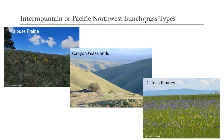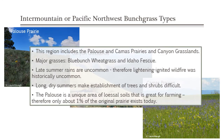Going back to those regions — Palouse Prairie, canyon grasslands, Camas Prairie — some characteristics: the major plants are blue bunch wheatgrass and Idaho fescue. They get very little summer rain, so we don't have a lot of lightning strikes during the middle of the season that might really promote grasslands. These ecosystems, because of their long dry summers, make it difficult for shrubs to establish.